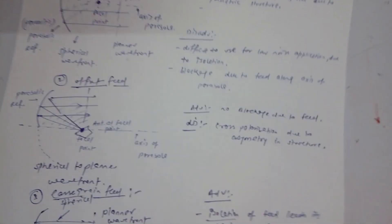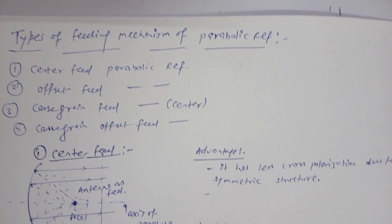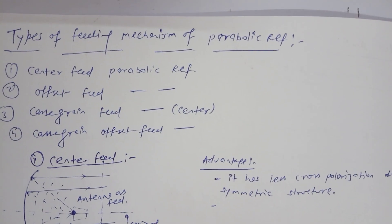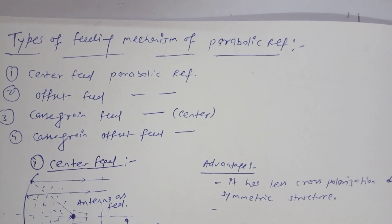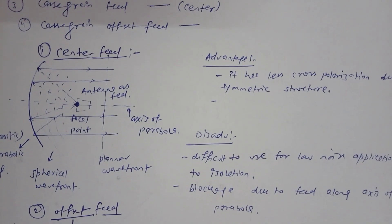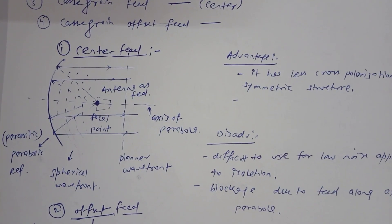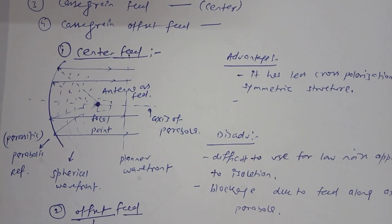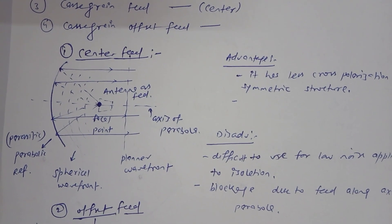There are four types of feeding mechanisms for the parabolic reflector: center feed, offset feed, Cassegrain feed, and Cassegrain offset feed. In the center feed mechanism, a parabolic reflector is used with a horn antenna placed at the focal point on the axis of the parabola. The signal from the horn antenna reflects and converts into a planar wavefront.